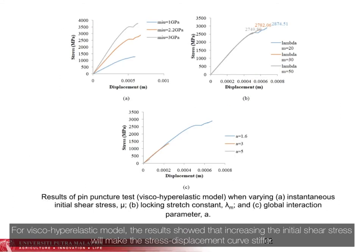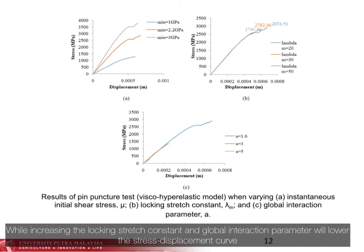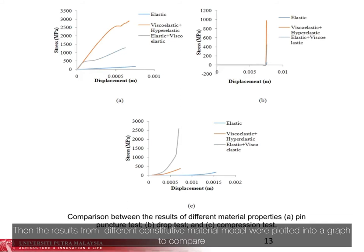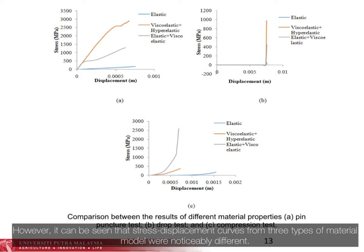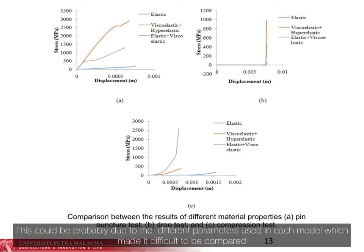For the visco-hyper-elastic model, the results show that increasing the initial shear stress will make the stress-displacement curve stiffer, while increasing the locking stretch constant and global iteration parameter will lower the stress-displacement curve. The results from different constitutive material models were plotted in a graph to compare. However, the stress-displacement curves for the three types of material model were noticeably different, probably due to the different parameters used in each model, which made it difficult to compare.